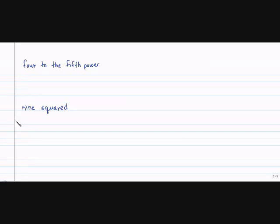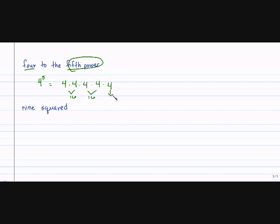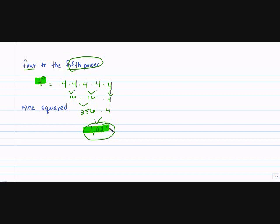Here we have a verbal expression — the words are written out — and they want you to write it as an exponent. If it said write it in standard form, you'd first write it as an exponent and then solve it. So: 4 to the 5th power means 4 times 4 times 4 times 4 times 4. 4 times 4 is 16, and 4 times 4 is 16. Bring down my 4, and 16 times 16 is 256, times 4 is 1,024.